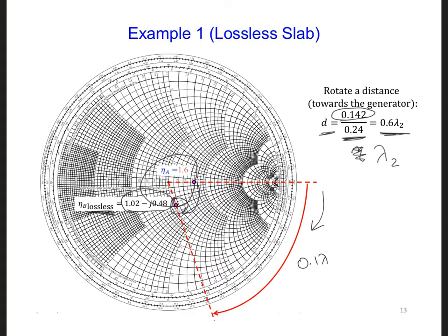So we're going to read this off, and we have to denormalize it. So eta BD normalized is going to be equal to 1.02 minus j0.48. That's from here. And we're going to multiply that by eta 2, which gives us 120.9 minus j56.9 ohms.